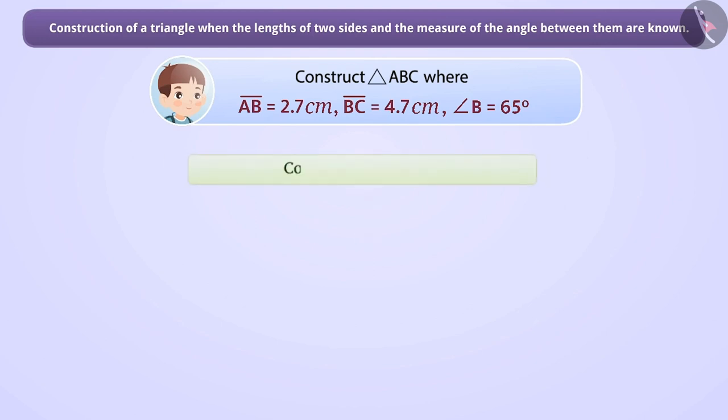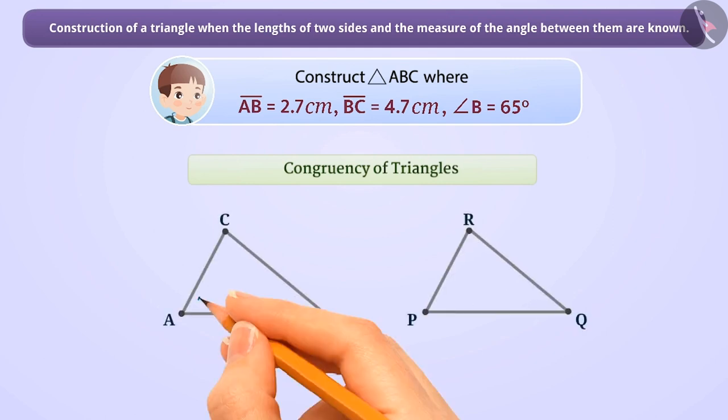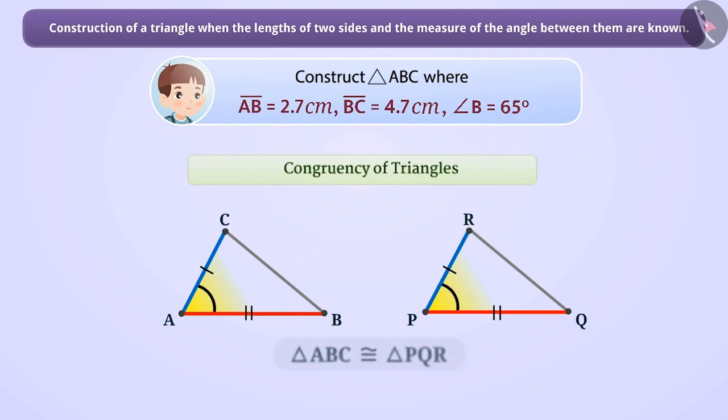In the chapter Congruence of Triangles, we learnt that if two sides and the angle included between them of a triangle are equal to two corresponding sides and the angle included between them of another triangle, then the triangles are congruent.